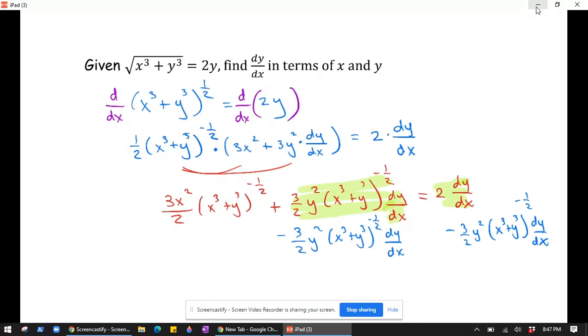There's more writing in this problem than anything. Okay, so that leaves on the left-hand side 3x squared over 2. And at this point we can probably turn that negative exponent into a radical, so it's a negative exponent so it goes down. So I'm going to write it as 2 square root of x cubed plus y cubed.